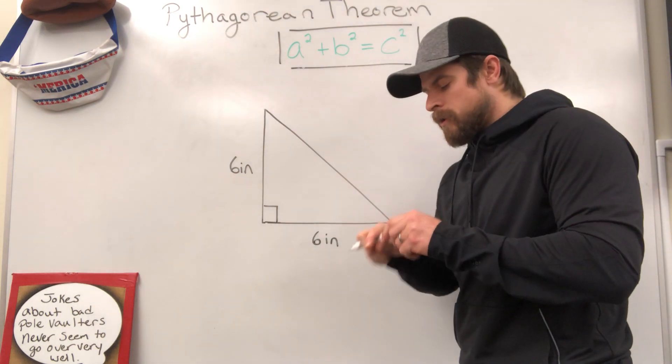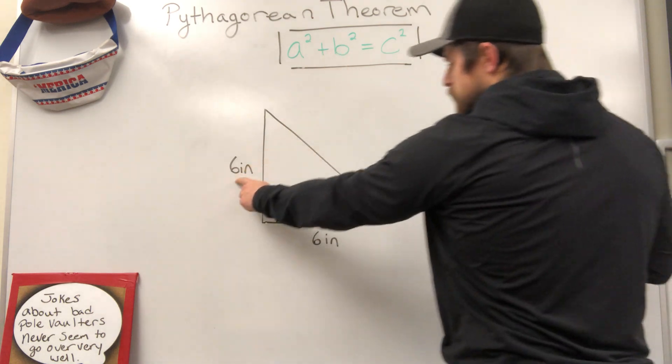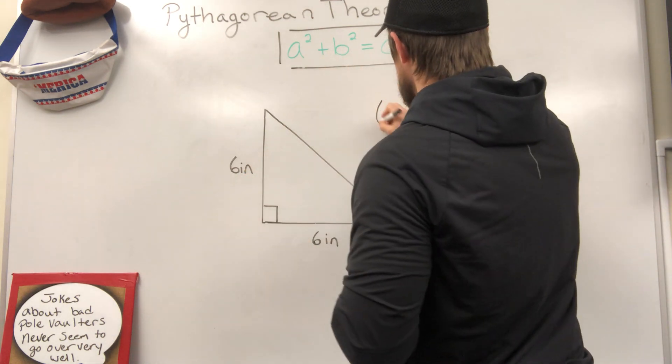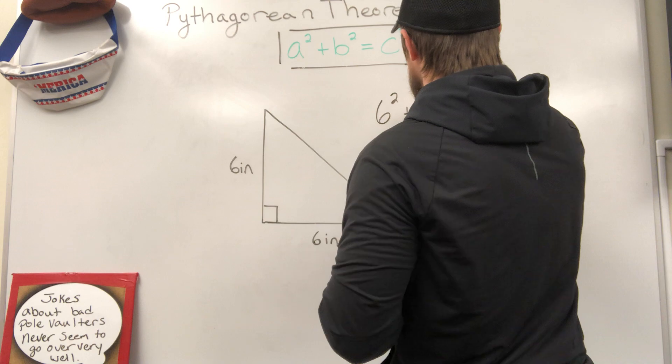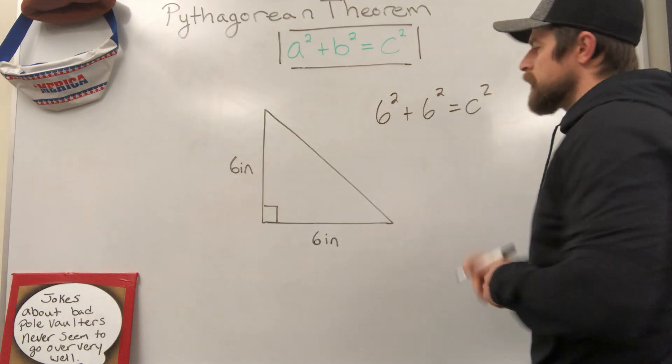Brand new marker today. Nothing better. A squared plus B squared equals C squared. A and B are our legs, so 6 inches and 6 inches. So I'm going to say 6 squared plus 6 squared equals C squared.